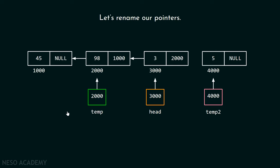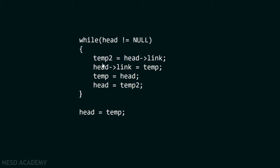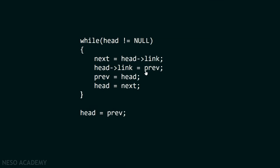Let's rename our pointers to make them more meaningful. It is always the case that temp remains behind head and temp2 remains ahead of head. So we rename temp to prev (indicating previous) and temp2 to next. We replace all occurrences of temp with prev and temp2 with next in our code.